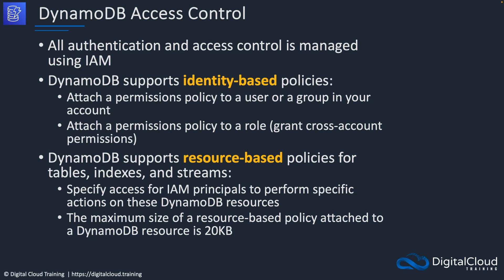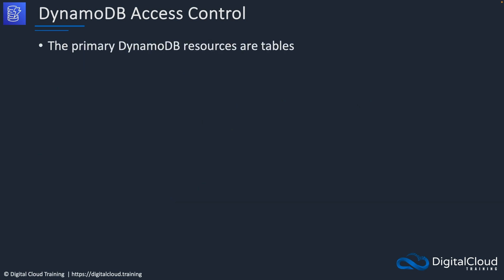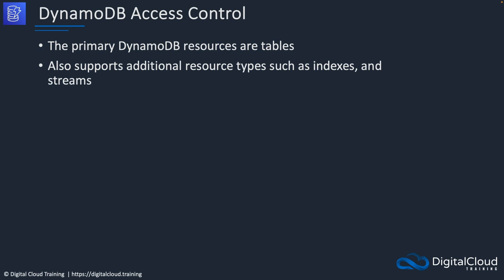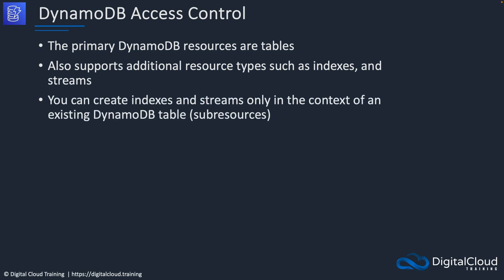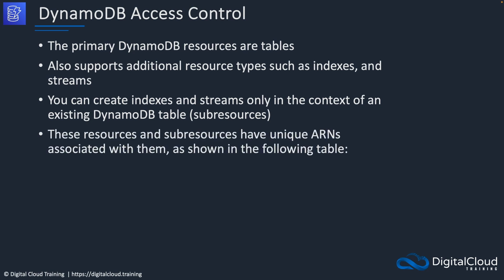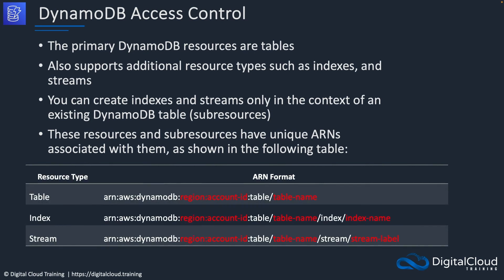The maximum size of a resource-based policy attached to a DynamoDB resource is 20 kilobytes. The primary resources in DynamoDB are tables, but there are also indexes and streams. You can create indexes and streams in the context of an existing DynamoDB table and they become sub-resources, each with unique ARNs associated with them, so you can apply access control to these different resources.